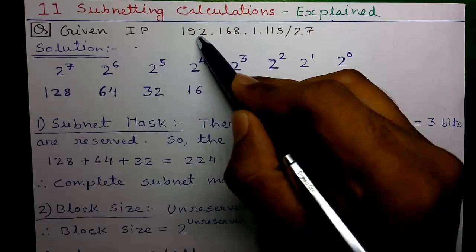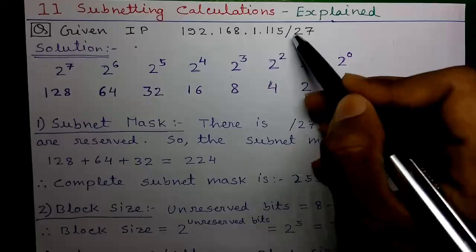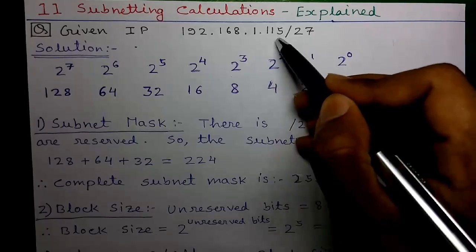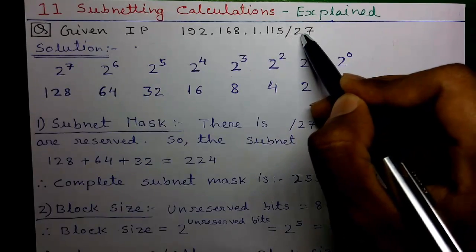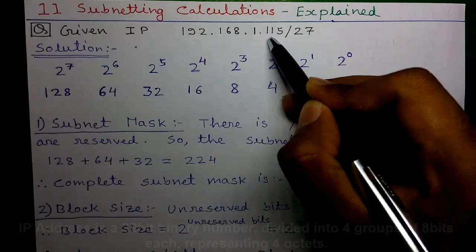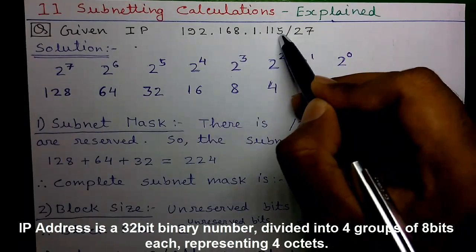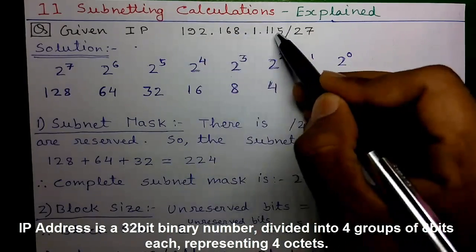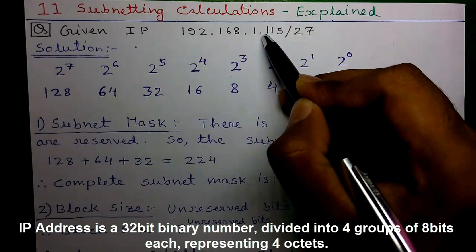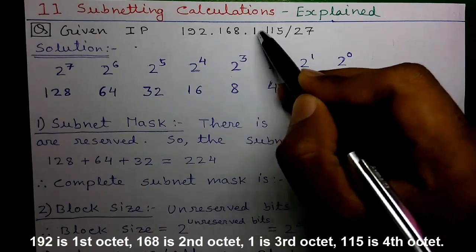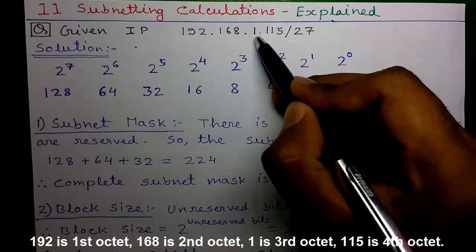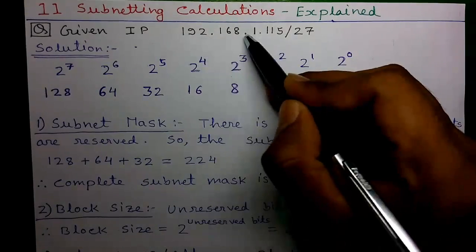Our given IP is 192.168.1.115/27. Here 192.168.1.115 represents an IP address and 27 represents the subnet mask. Both the IP address and subnet mask are represented using 32-bit binary numbers. The IP address is divided into four groups where each group contains eight binary bits representing an octet. The word 'octa' means eight, from which the word 'octet' comes. So 192 is the first octet, 168 is the second, 1 is the third, and 115 is the fourth octet, separated by three dots.